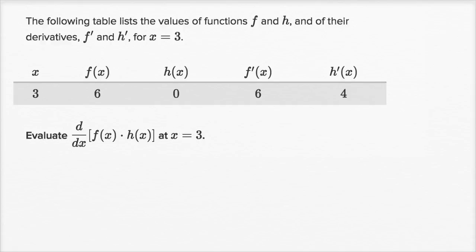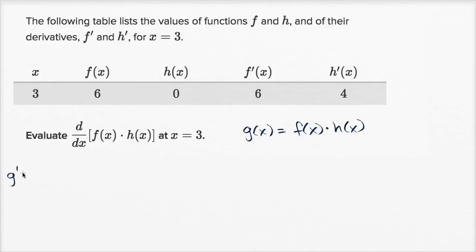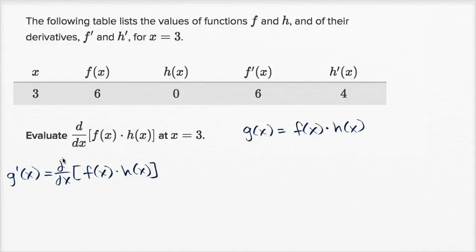One way to view this: if we define some function g of x as being equal to the product of f of x and h of x, then this expression is the derivative of g of x. So g prime of x is equal to the derivative with respect to x of f of x times h of x, which is what we want to evaluate at x equals three — we essentially want to evaluate g prime of three.